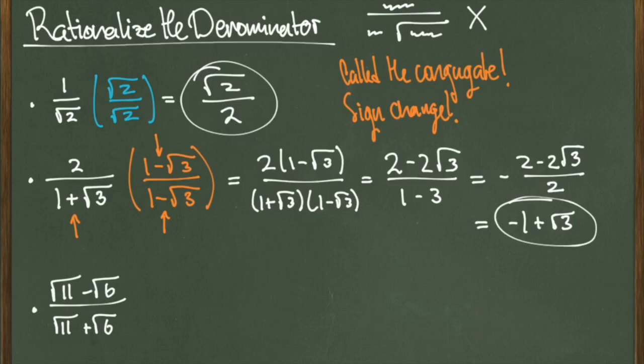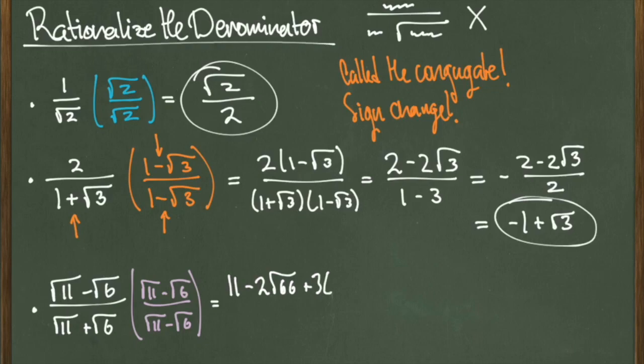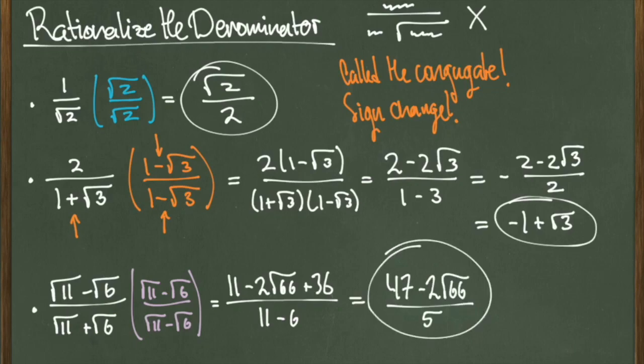For our last example, we'll simplify the square root of 11 minus the square root of 6, all over the square root of 11 plus the square root of 6, by rationalizing the denominator. Multiplying by the conjugate, we get root 11 minus root 6 over root 11 minus root 6. We're using a negative because in the denominator the sign is positive, so we switch. When we multiply the fractions across, the numerator comes out to be 11 minus 2 square root of 66 plus 6, over 11 minus 6. This simplifies down to 17 minus 2 root 66 over 5, and we're done.